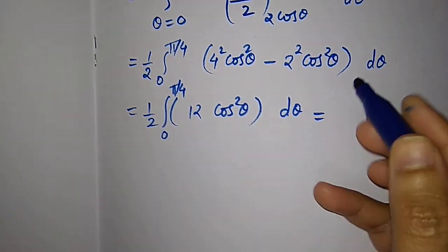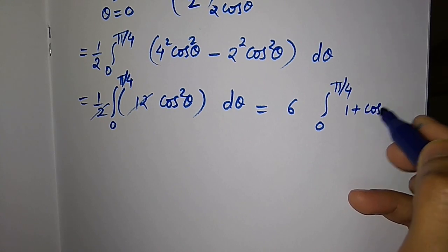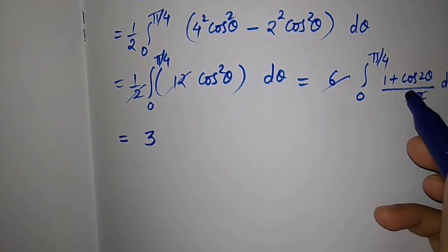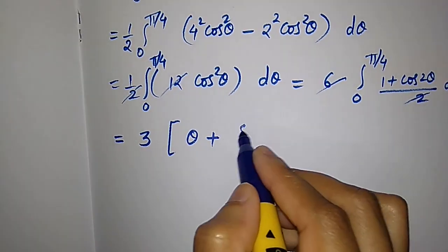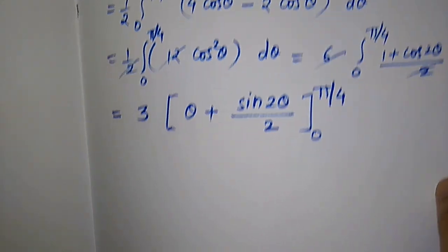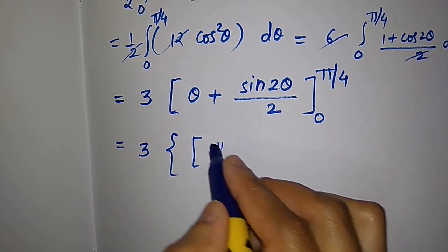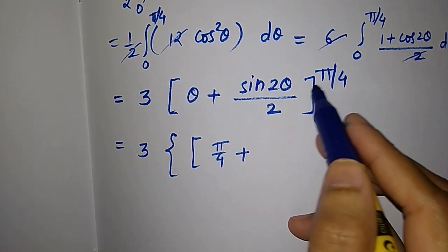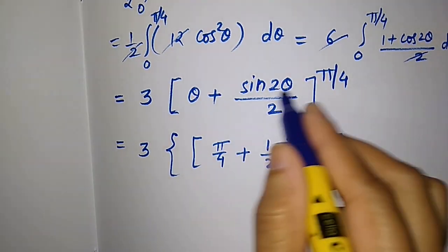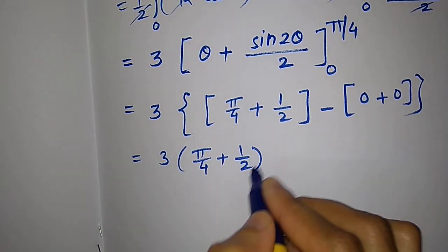Using cos²θ = (1 + cos2θ)/2: the integral becomes 6 · ∫₀^(π/4) (1 + cos2θ)/2 dθ = 3∫₀^(π/4)(1 + cos2θ)dθ = 3[θ + sin2θ/2]₀^(π/4) = 3[π/4 + sin(π/2)/2] = 3[π/4 + 1/2]. This is the area answer.